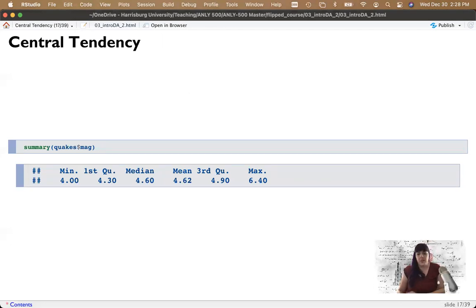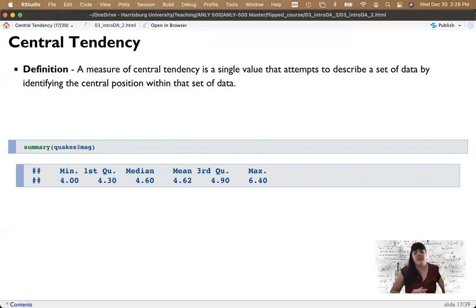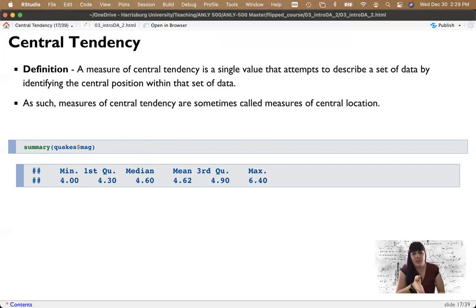So we're going to switch here from frequency distributions to central tendency. So we went from pictures to measures of distance. Now, central tendency is kind of the fancy name for where's the middle. It's a single value that attempts to describe the data by identifying the middle. The middle can be defined in several ways. You wouldn't think this, it's just the middle. But what we can do is, based on the type of distribution, define the middle a couple of ways. Measures of central tendency are sometimes called central location. You just got to remember that central tendency means the middle.